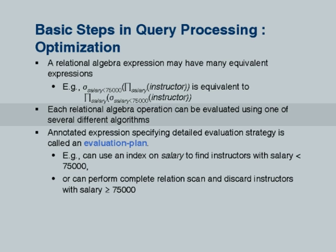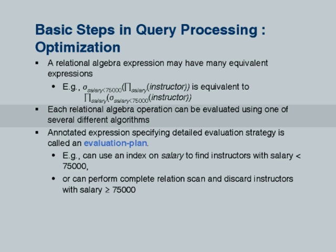There are many algorithms to evaluate each operator — to evaluate the select, the join, and so forth. As an example, for the selection operation — select salary less than 75,000 — one way is to scan the whole relation, look at each tuple, look at its salary value, and output it if it is less than 75,000. This is called a linear scan on the relation.